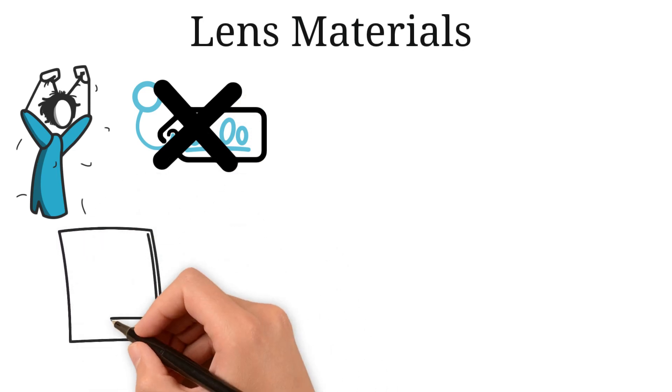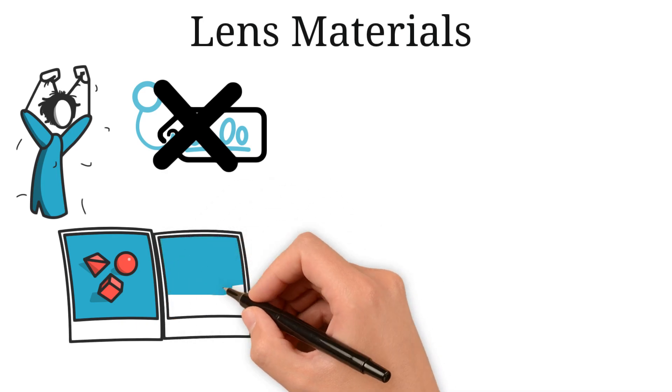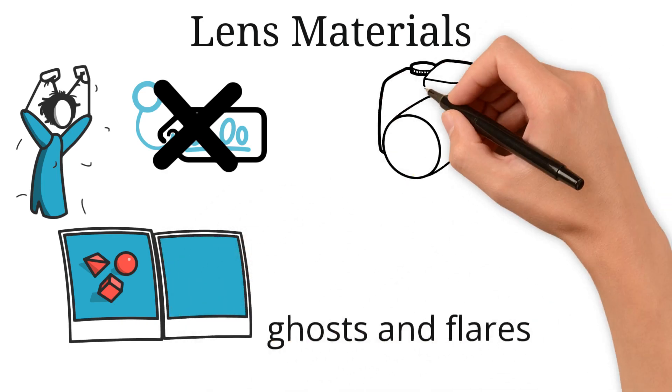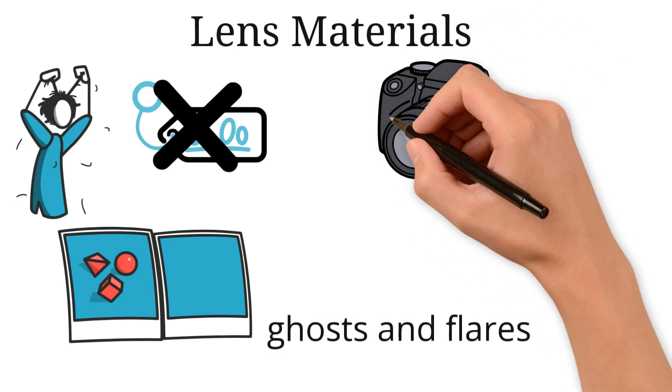Reflection within the lens causes problems like image duplication and the transmission of non-image light to the image. This is known as ghosts and flares. Lens manufacturers use lens coatings to produce optics that can render an image with the least unwanted optical degradation. This process is extremely complex and costly.